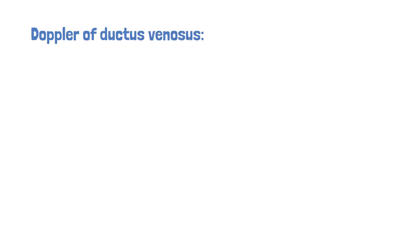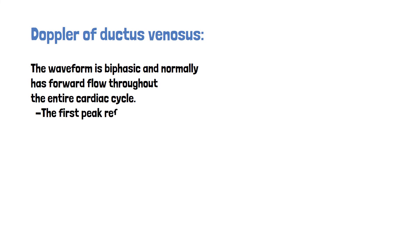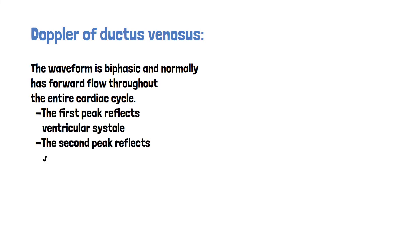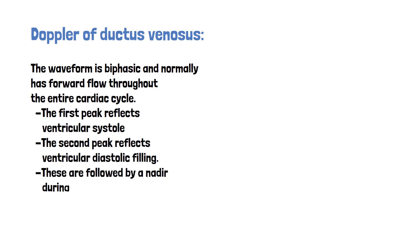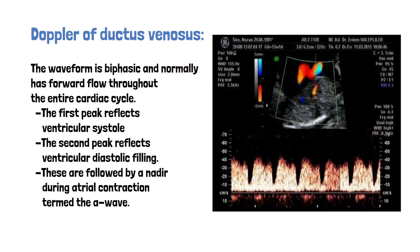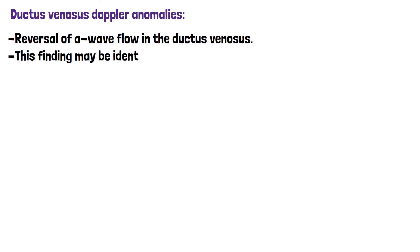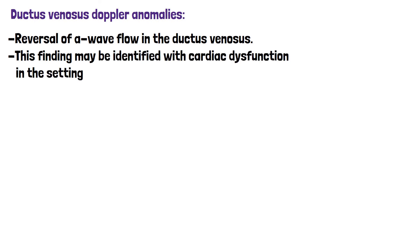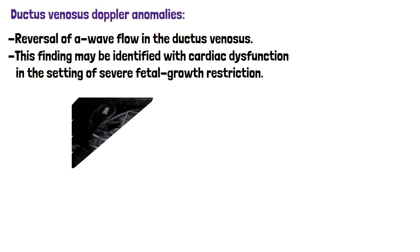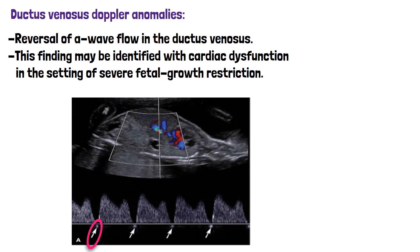Doppler of the ductus venosus: the waveform is biphasic and normally has forward flow throughout the entire cardiac cycle. The first peak reflects ventricular systole, the second peak reflects ventricular diastolic filling, and these are followed by a nadir during atrial contraction called the A wave. A ductus venosus Doppler anomaly is reversal of A wave flow, which may be identified with cardiac dysfunction in the setting of severe fetal growth restriction.